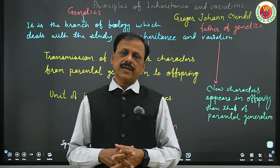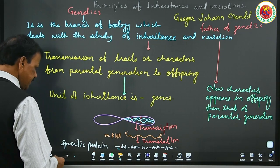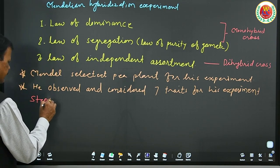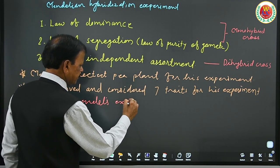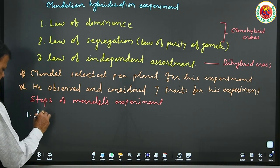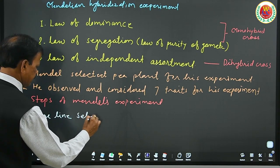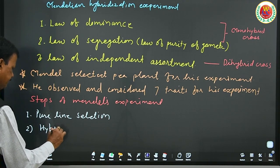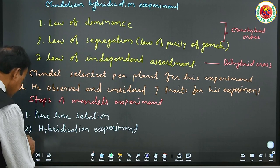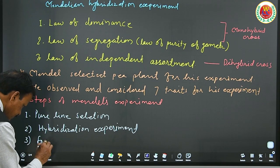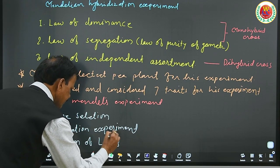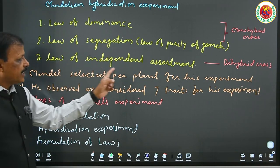Now we understand which characters are being controlled as selected by Mendel. We have just introduced the principles of inheritance with genetics and the beginning of Mendel's experiment. Mendel started his experiment in three steps: step one — pure line selection; step two — hybridization experiment; and step three — formulation of laws, that is, Mendel's three laws: law of dominance, law of segregation, and law of independent assortment.